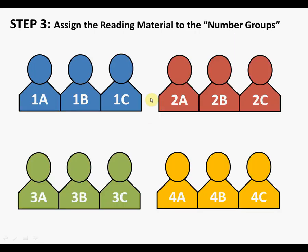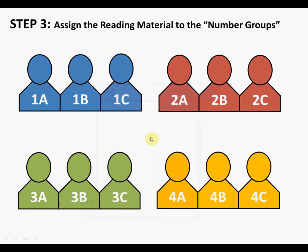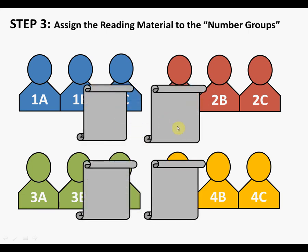After students are in their first number groups, assign the reading material to each group. The reading material should already be in the syllabus and each student should have it. Since the reading is divided into four segments, explain which segment each group covers: group 1 does chapter 1, group 2 does chapter 2, group 3 does the first half of chapter 3, and group 4 does the final half of chapter 3.